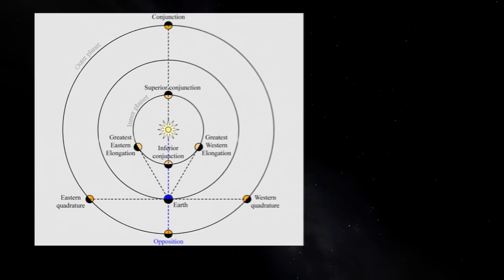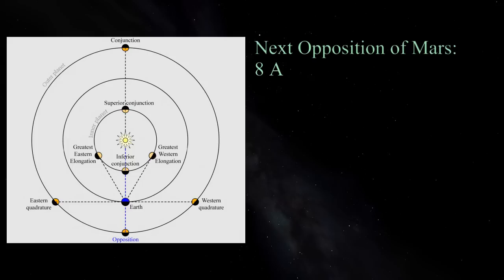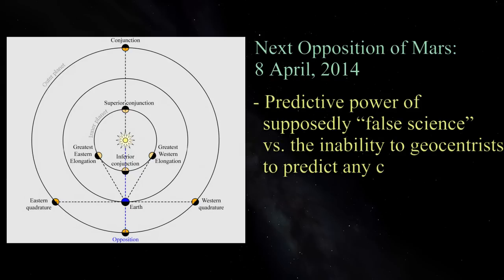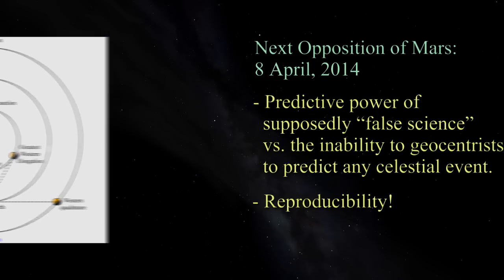In this worked example we'll also use the opposition of Mars. The next one is on the 8th of April 2014, so we'll use that. Why an event in the future? Firstly, it demonstrates the predictive power of what fundamentalist morons like to call false science. It'll provide a stark contrast to their total inability to either model reality or predict it. Secondly, two people with access to decent telescopes will be able to follow along and do their own measurements using this as an example.